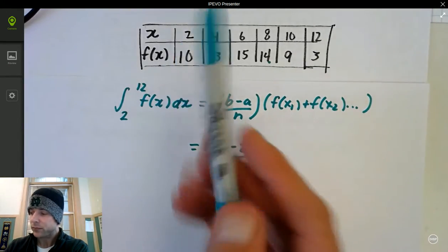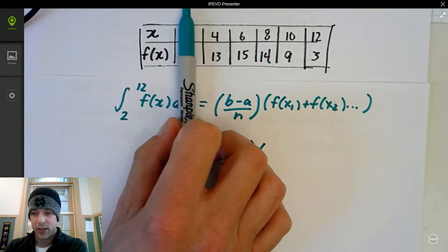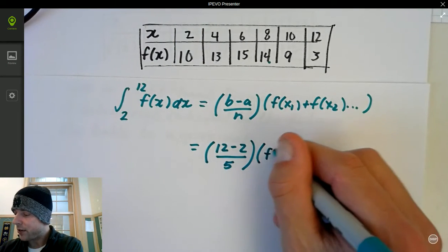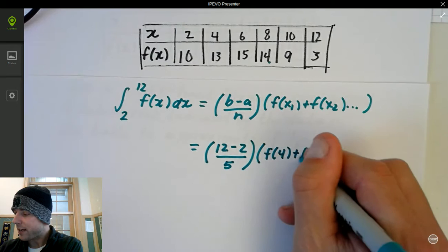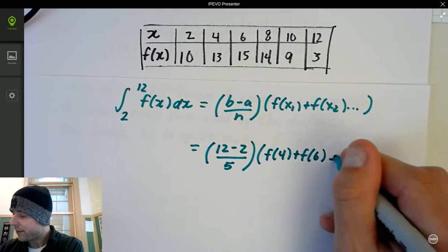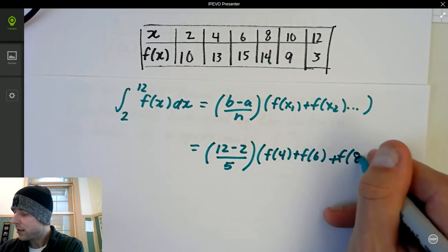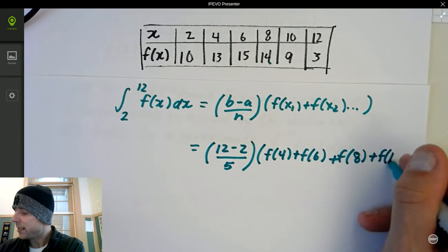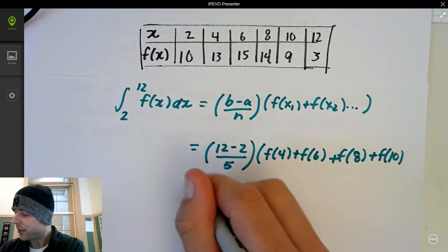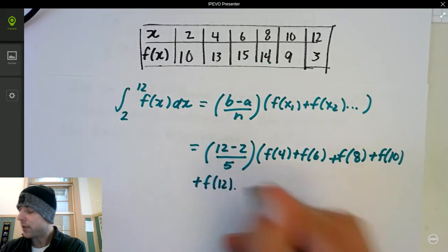Times, we're actually skipping this value, and we're going to do times the value at f(4) plus f(6) plus f(8) plus f(10) and f(12). I'm going to put that down here. I ran out of space.